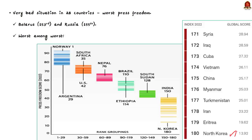Along with North Korea, there are 27 other countries classified as very bad — totaling 28 countries with the worst press freedom. Important countries in this group include Belarus at 153rd position and Russia at 155th position. The bottom 10 includes Myanmar, China, Turkmenistan, Iran, Eritrea, and finally North Korea. Two of our important neighbors feature in this bottom 10.